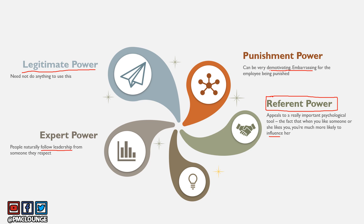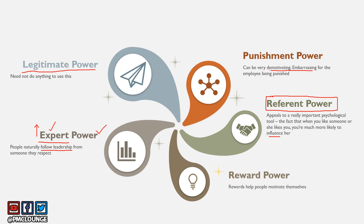Expert power: people naturally follow leadership from someone they respect. This gets a big thumbs up. In all situations, at all times, if you are an expert, people are naturally going to follow you. This is a type of power you should look forward to using and a characteristic you should try to improve. Become an expert in your field — it will earn a lot of respect from your team members.